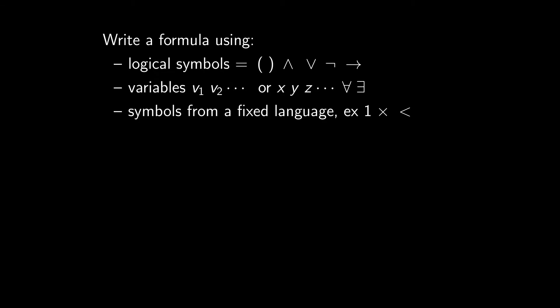So in short, to do logic, we need to write formulas, and we are allowed to use logical symbols, which are the equal sign, parenthesis, this symbol meaning and, this symbol meaning or, this symbol meaning not, and this symbol meaning implies. With these logical symbols, you can write statements such as a implies b, not b and a, etc. And you can also use variables, sometimes written v1, v2, etc., but I'd rather use letters like x, y, z. And you also have quantifiers to put in front of your variables. And finally, you have symbols coming from a language that can change depending on what you want to express. You can have constant symbols such as 1 or 0, function symbols such as plus, times, exponential, and relation symbols such as being smaller, being divisible by, or any other stuff.